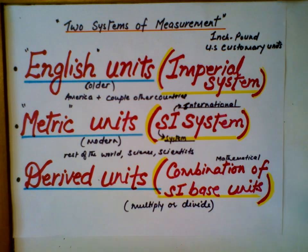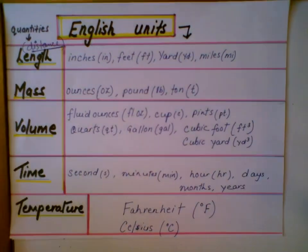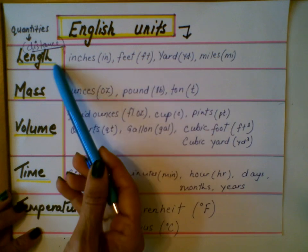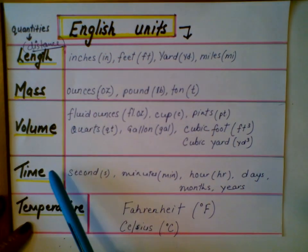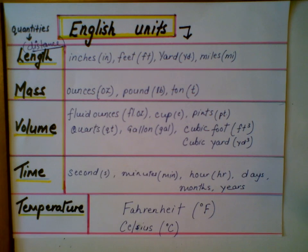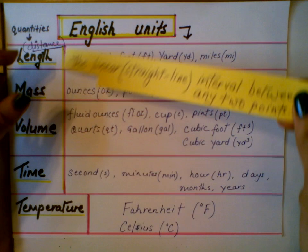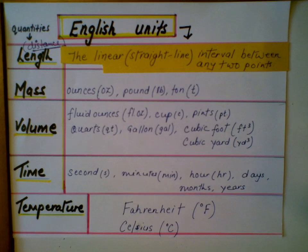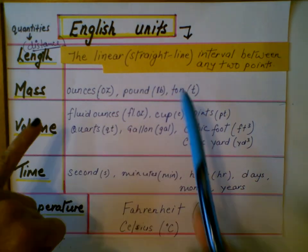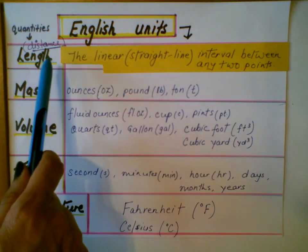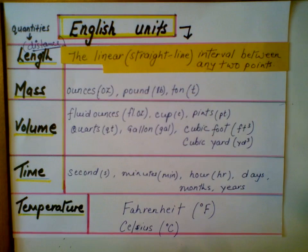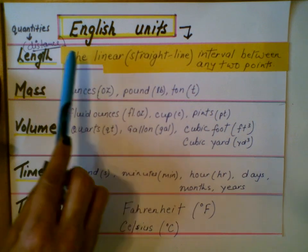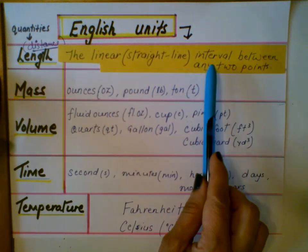Let's go to the English units now. This chart shows the English units for most common physical quantities: length, mass, volume, time, and temperature. Length is the linear, or straight line, interval between any two points. This applies whether it's a length, height, width, circumference, or perimeter. The more technical term for length would be distance. So distance is the linear interval between any two points.